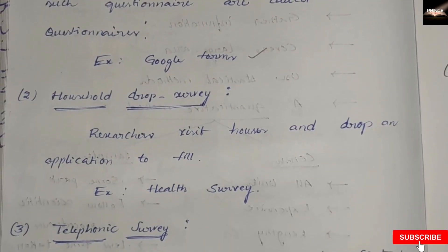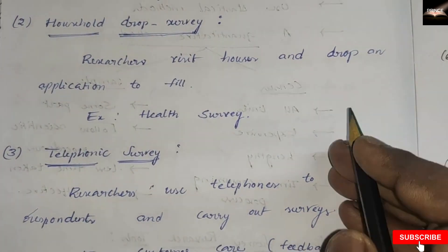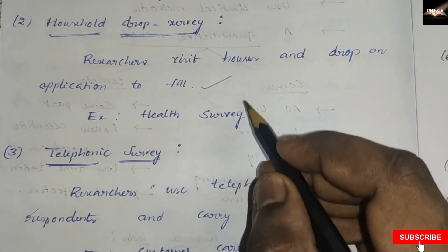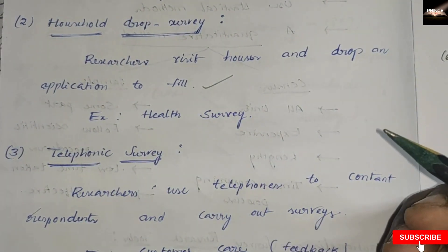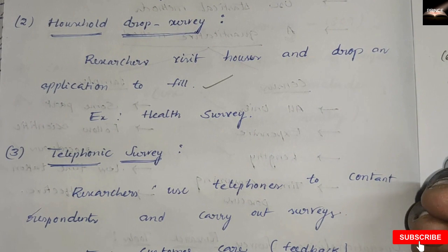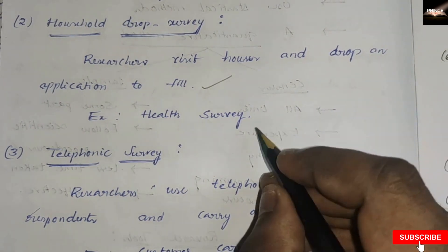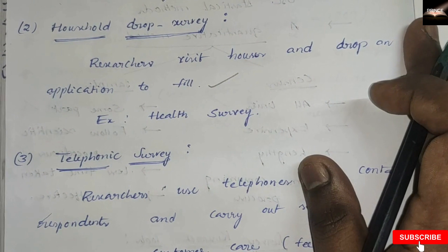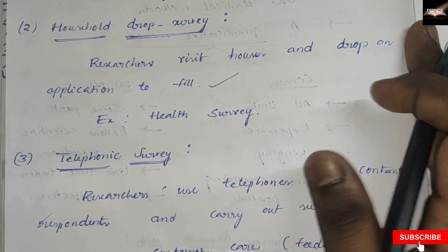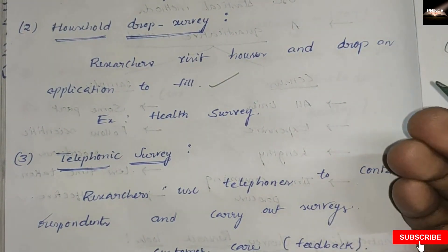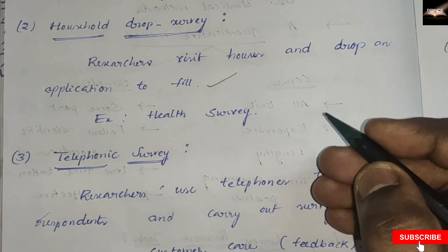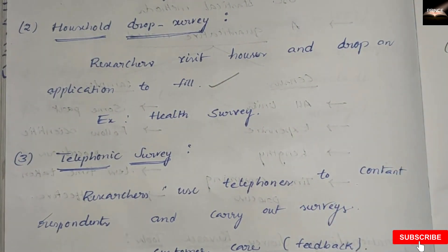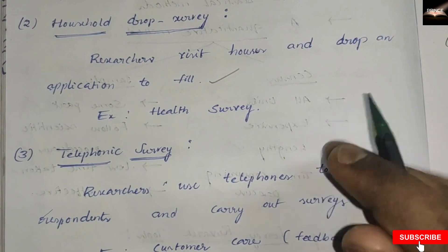Next is the household drop survey. Researchers visit houses and drop an application to fill. For example, health surveys conducted in India where ASHA workers and health workers come to our houses and collect health details from us.